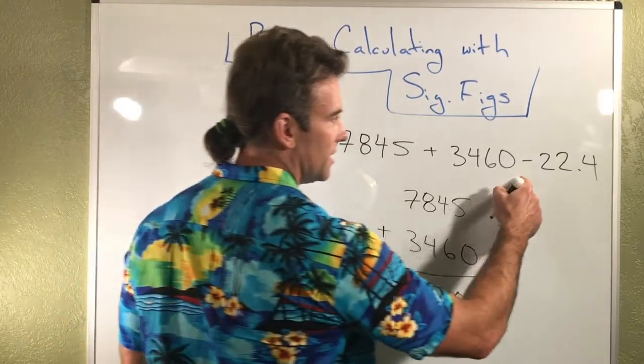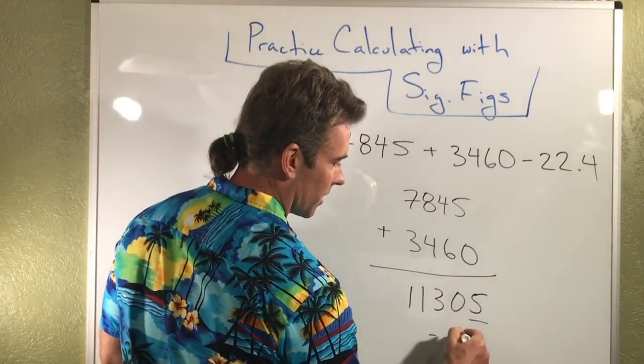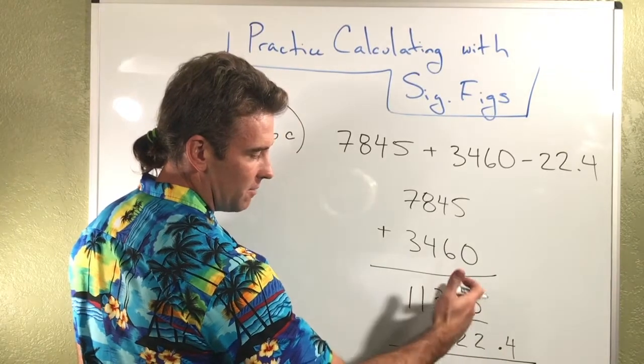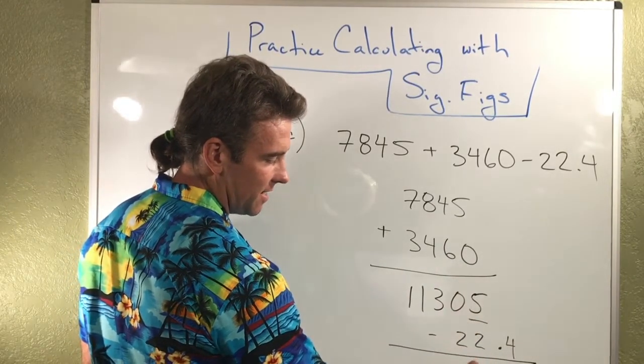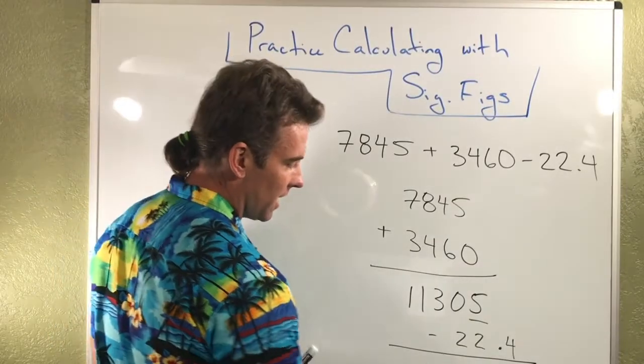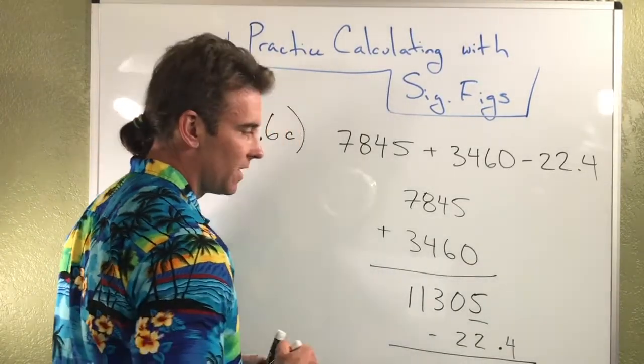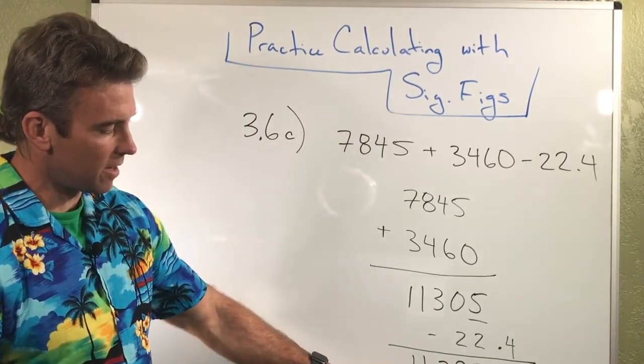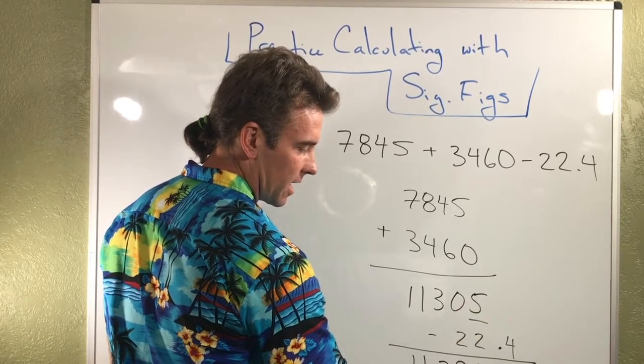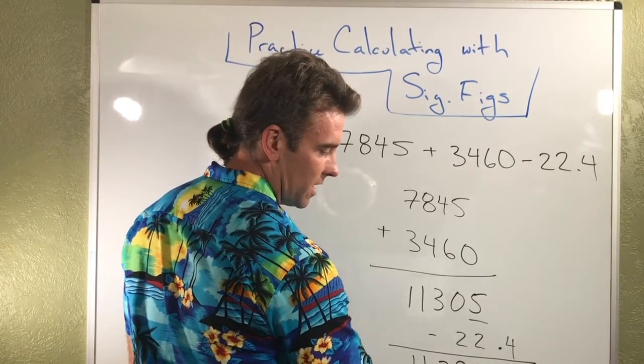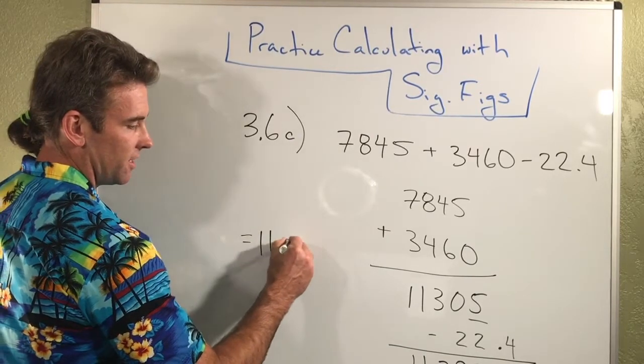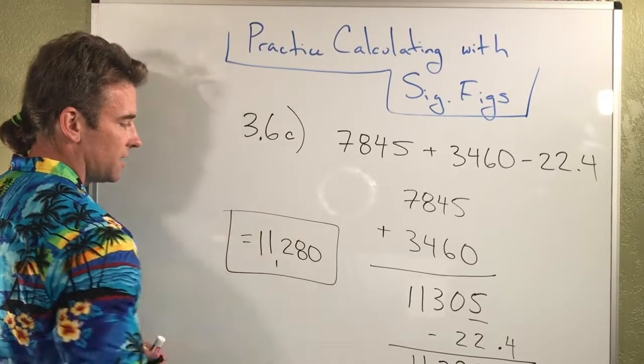What we'll do is we'll continue and subtract 22.4. And of course, we're going to have to line it up. And obviously, the last column that has significant digits is this tens column right here. So we're going to end up rounding to that digit eventually. Okay, so that's the value that I ended up with after I was all done there. And you'll notice that this column right here, the tens place, is the last column that has all significant figures. So these two are actually insignificant. So I'm going to have to round the final value here to 11,280 as the reported value.